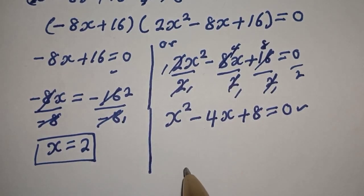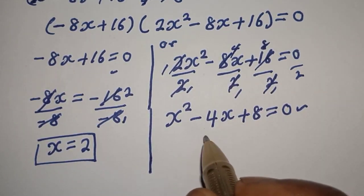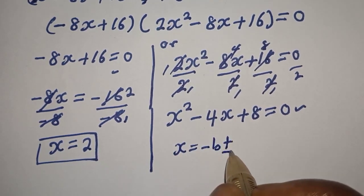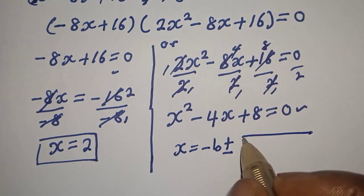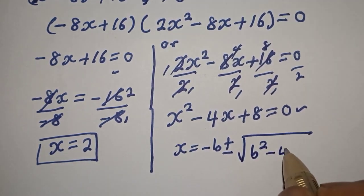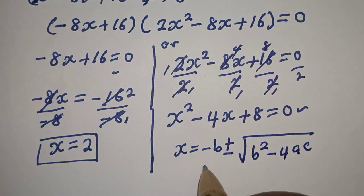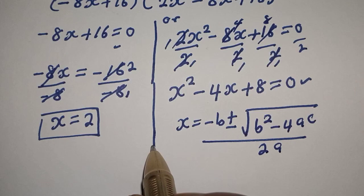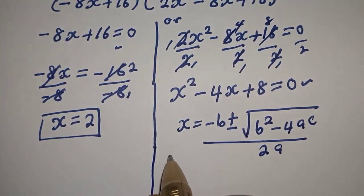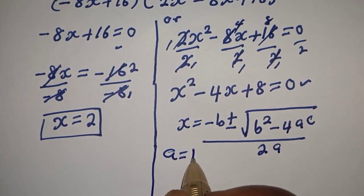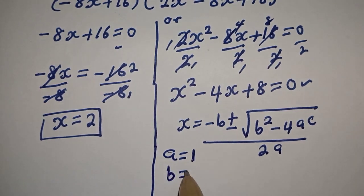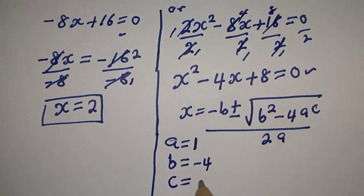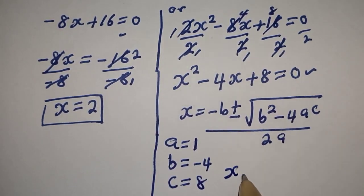This quadratic can be solved using the quadratic formula: s equals negative b plus or minus the square root of b squared minus 4ac, all over 2a. From the equation, a equals 1, b equals minus 4, and c equals 8.